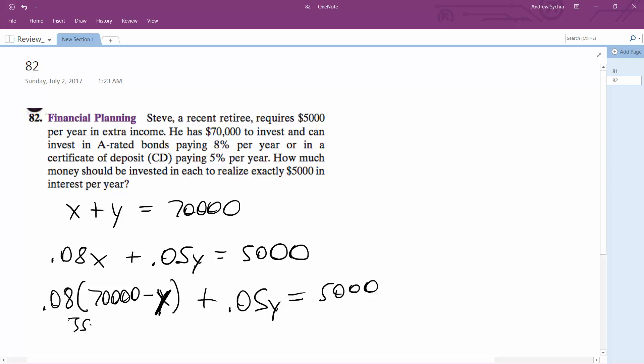0.08 times 70,000 becomes 5,600 minus 0.08Y plus 0.05Y, and we get 5,600 minus 0.03Y equals $5,000.